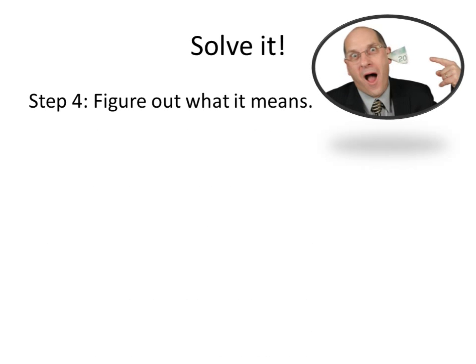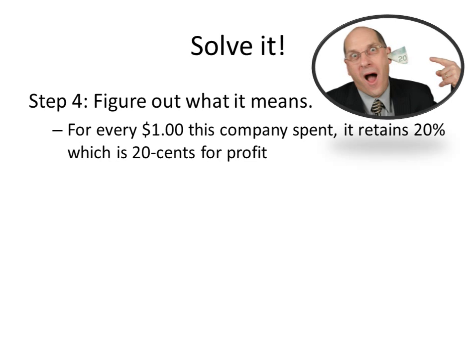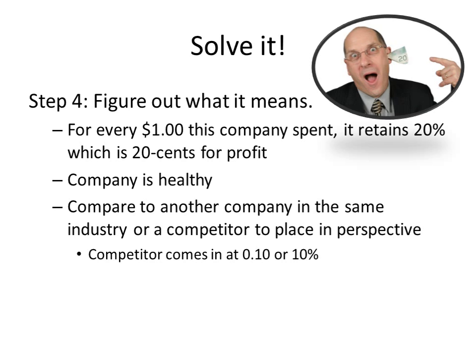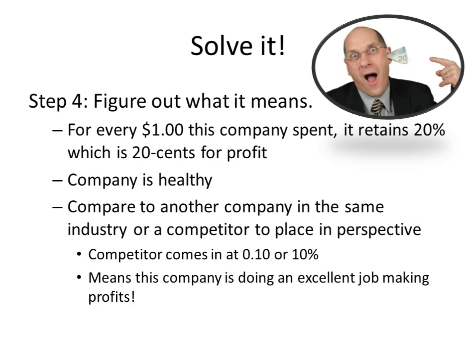We need to know what this number means. In this case it means that for every one dollar the company has spent, it retains 20%, which is twenty cents of profit. This company is healthy because it's making a profit and it's not very slim. Compare it to another company or competitor in the same field and you'll place this number into perspective — after all, 20% may not be healthy if industry returns look more like 40–60%. However, if industry standards indicate companies in this field earn a 5–10% net profit margin, this company would be doing quite well. We do compare this company to a competitor and it comes in with a net profit margin ratio of 0.10, or 10%, so we can determine that this company is doing an excellent job of returning profits for its shareholders, regardless of whether it's publicly or privately held.